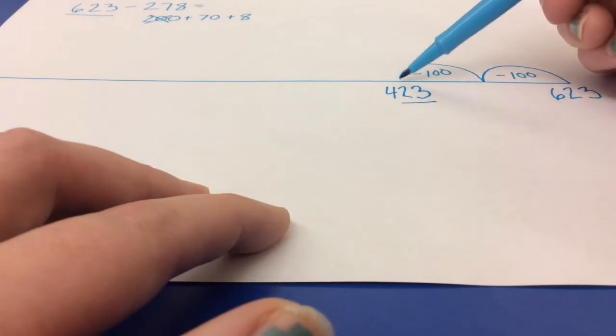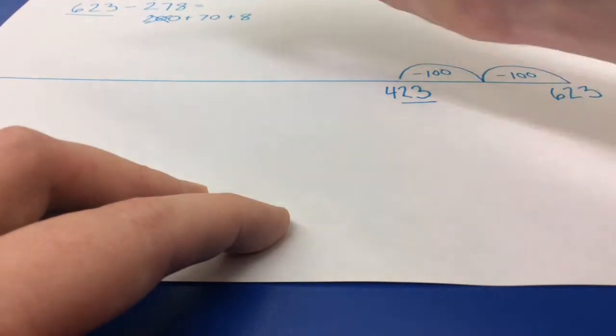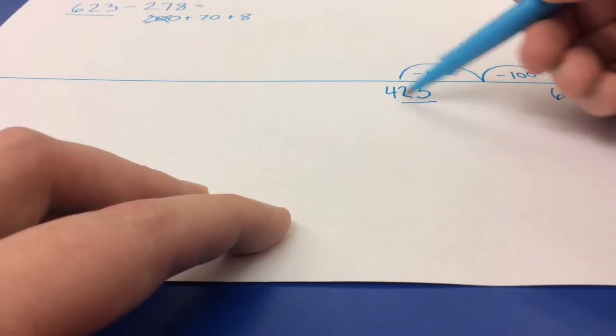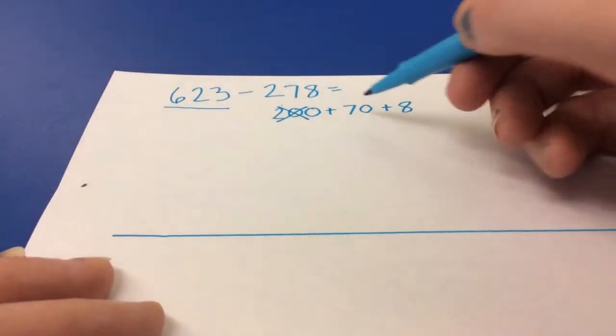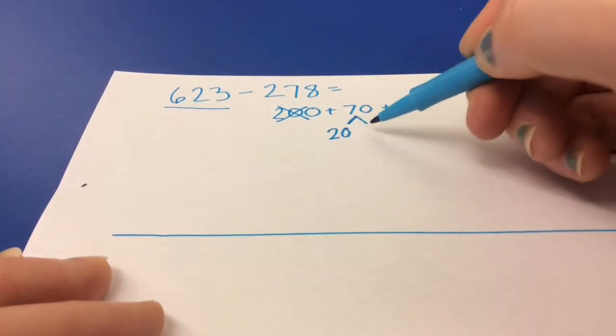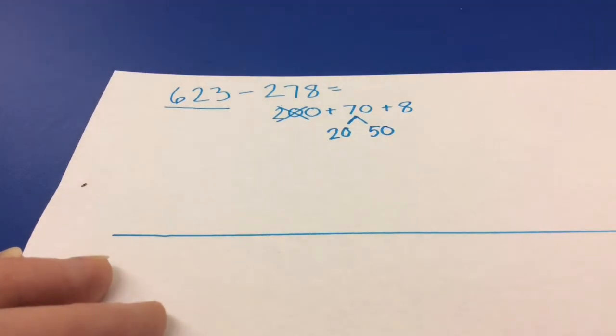So I could do 10, 10, 10, 10, 10, 10, 10. But that's going to take me a lot of time. So instead, I look at the 10s digit, and I realize there's 20. If I go back up to my 70, I know that 20 and 50 equal 70.